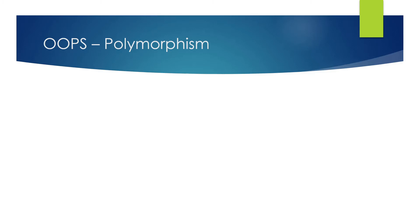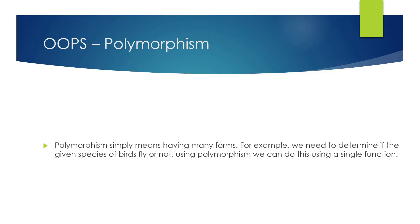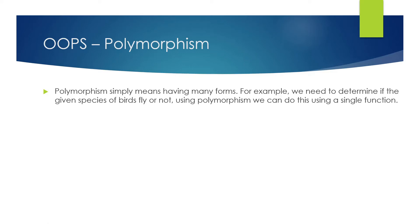Let's talk about polymorphism, which is the third concept for today. Polymorphism simply means having many forms — 'poly' means many and 'morphism' means form. For example, we need to determine if a given species of birds can fly or not, and using polymorphism we can do this using a single function. We'll take an example for that.